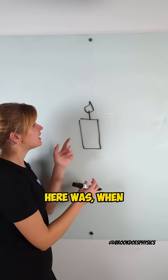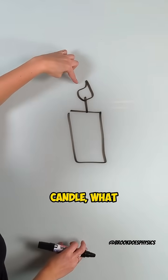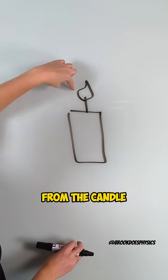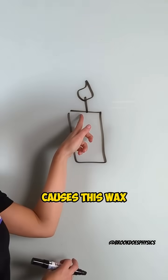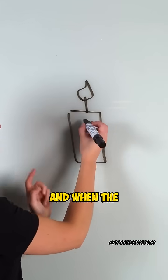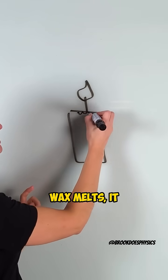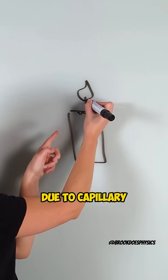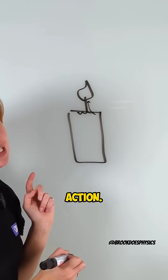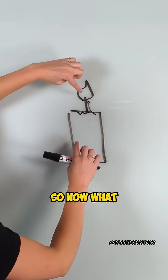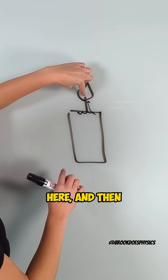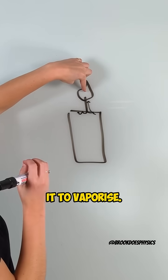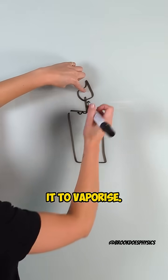So what happened here was, when you light a candle, the heat from the candle causes this wax to melt, and when the wax melts, it then gets drawn up the wick due to capillary action. So now what we've got is melted wax up here, and then the flame causes it to vaporize.